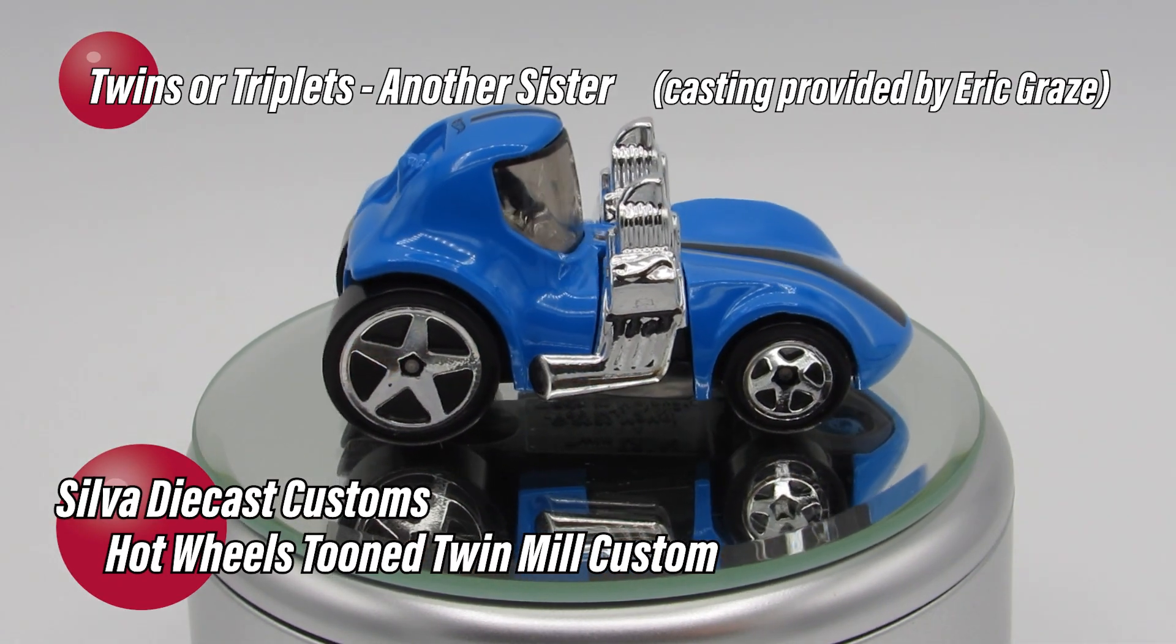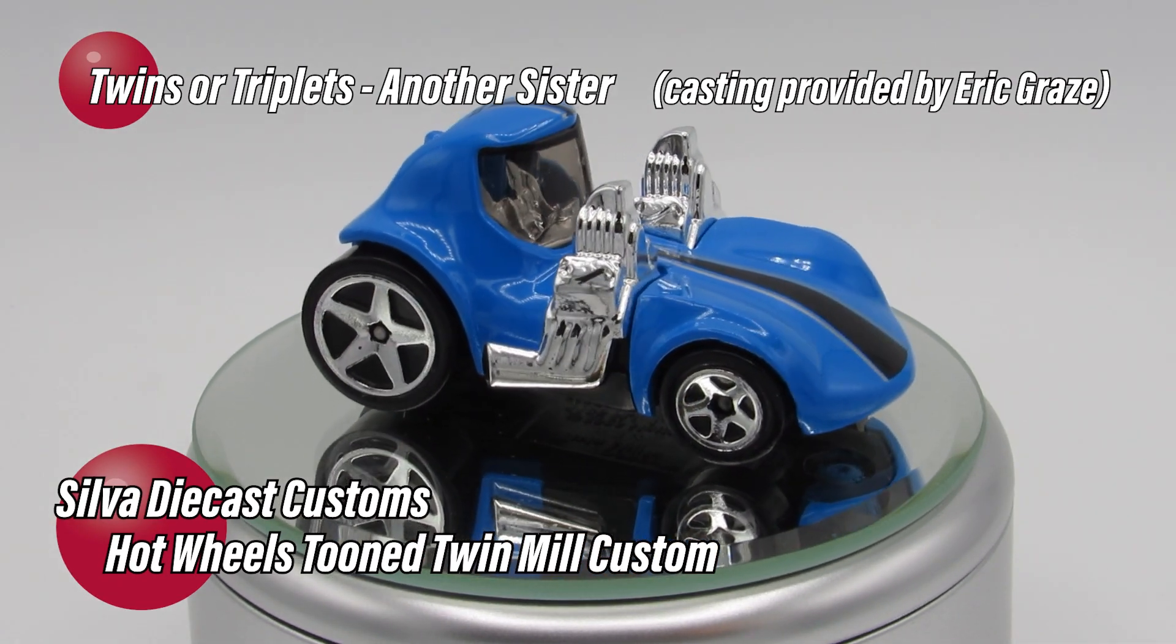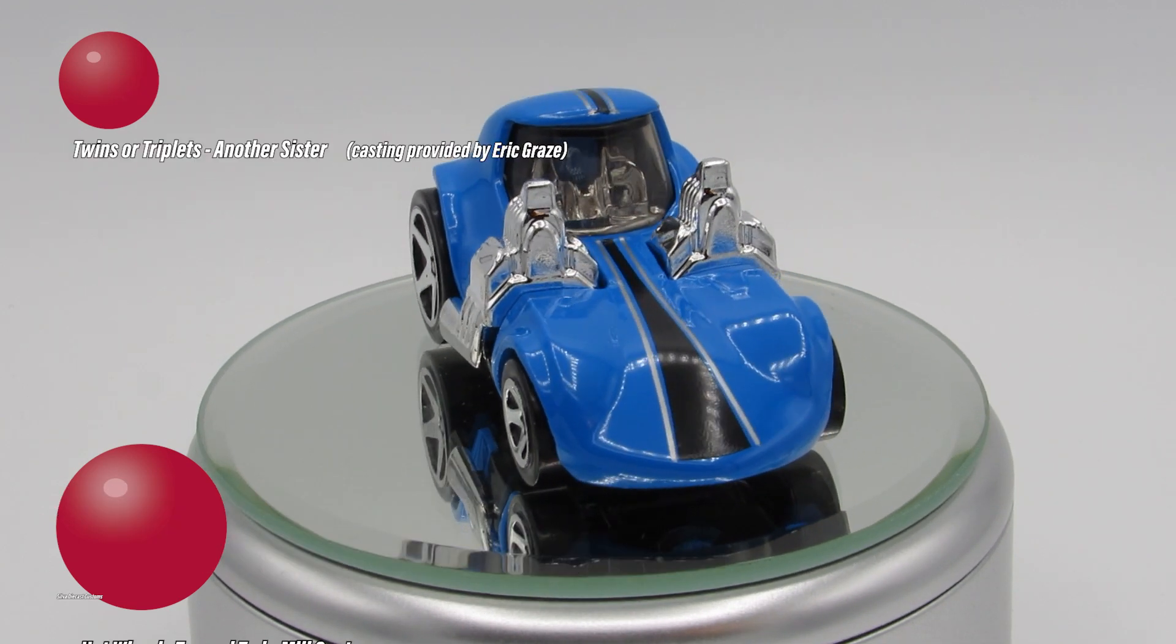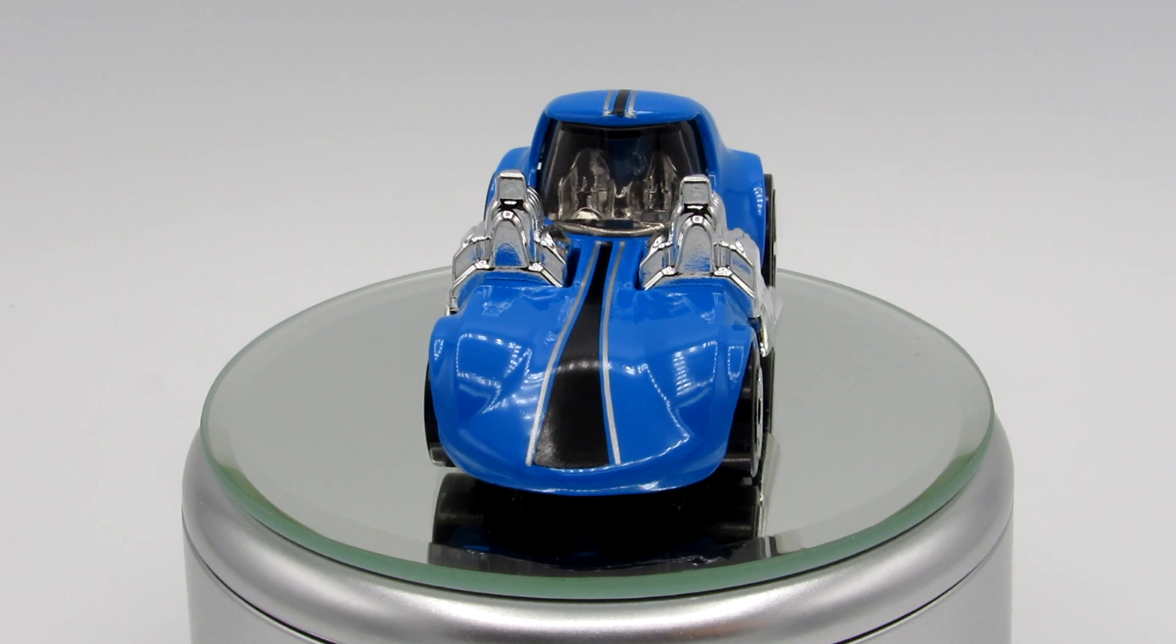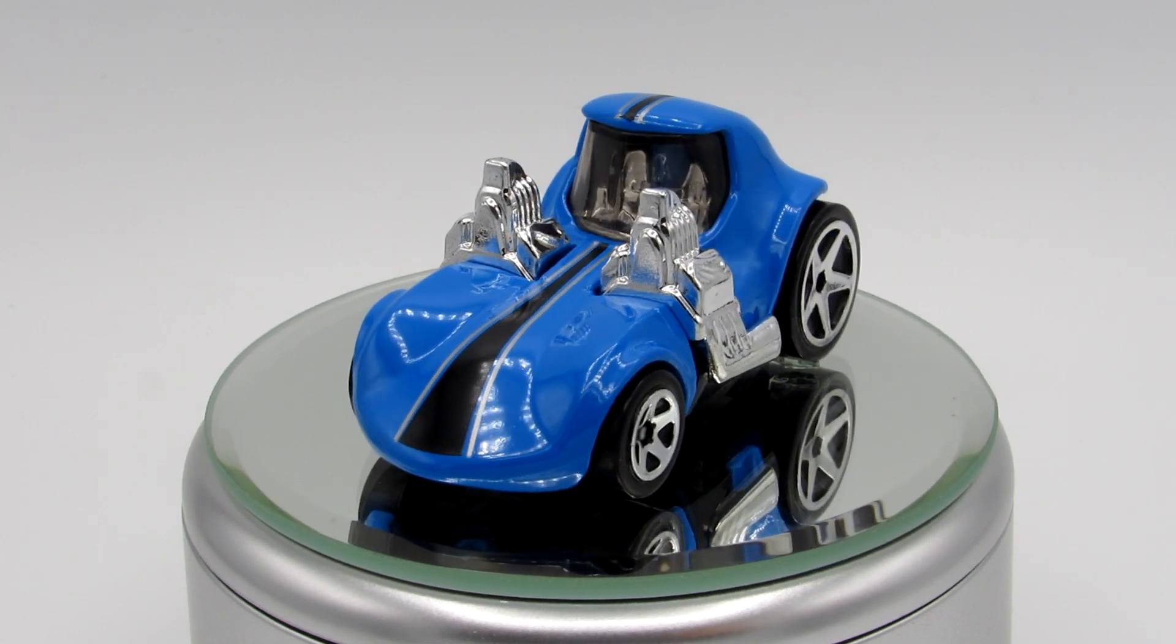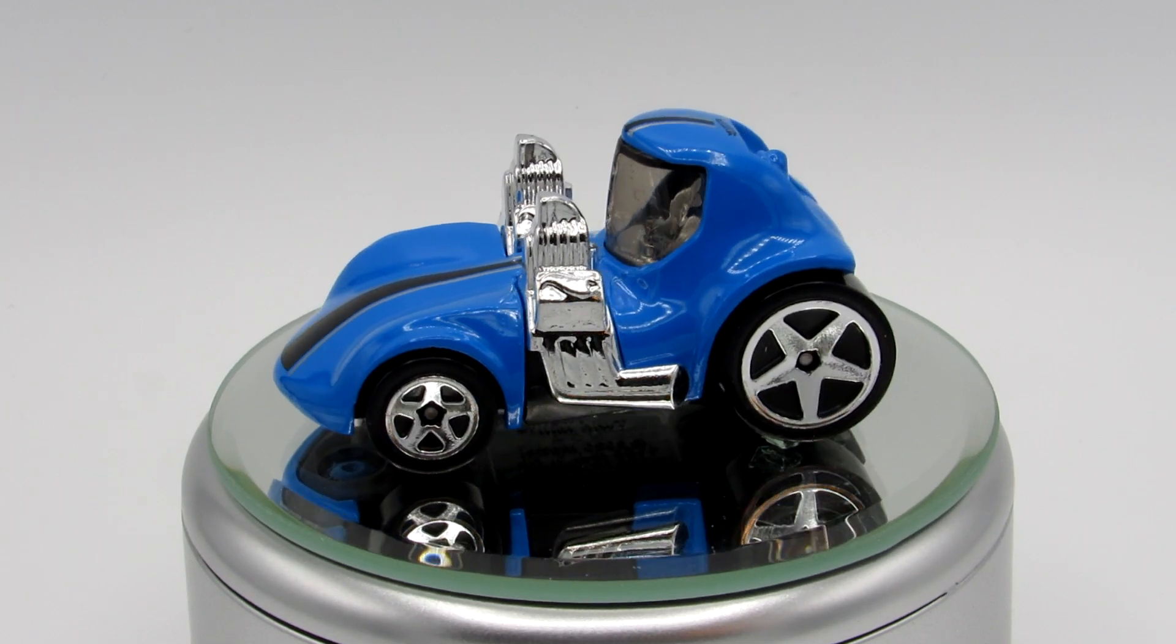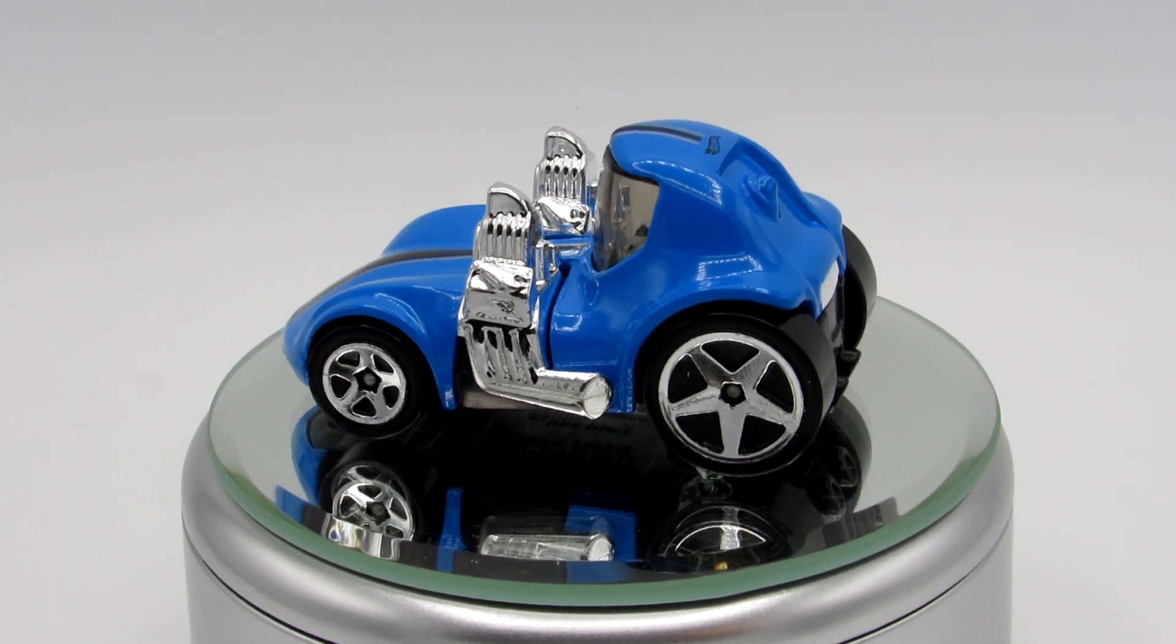Recently I did a series of builds called Twins or Triplets, in which I took the twin mill, the original twin mill red line, the twin mill 2, and the twin mill 3. I did a video for each of them and I made them all into red lines and painted them all with the same red metal cast paint.